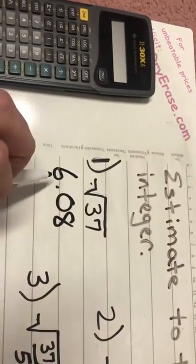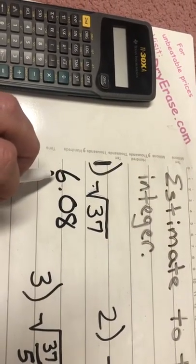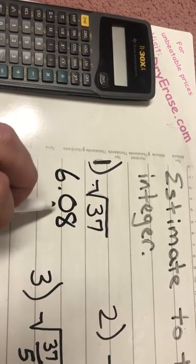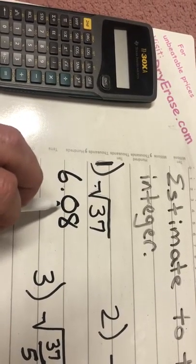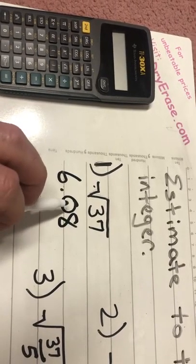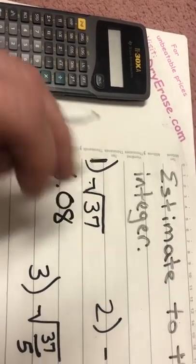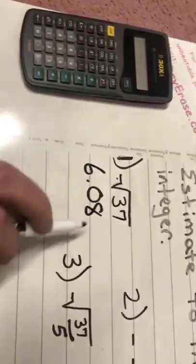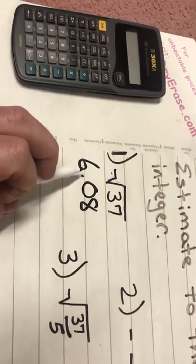To the nearest integer means the ones place, nearest number. So this zero that comes after the decimal is gonna tell me what to do with this six. Well the rules of rounding, four and less we round down, five and higher we round up. This tells me to round down, which means I'm gonna round down and keep this a six.